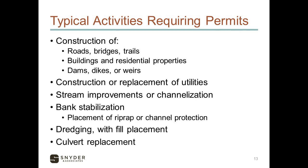What would trigger the need for a 404 permit? Any sort of construction activity that could cross a stream or a wetland may include roads, bridges, trails, or development. Construction of dams, dikes, weirs, and impoundment structures may also trigger a permit. Replacing utilities, maintenance, stream improvements, channelizing, stream bank stabilization such as placing riprap along the channel, dredging if there's fill placement within WOTUS, and culvert replacements — all of these are examples of typical activities we see every day that require permits.